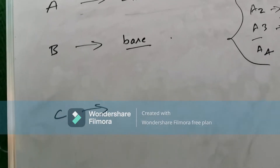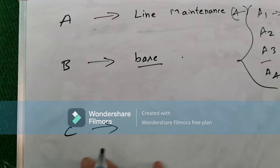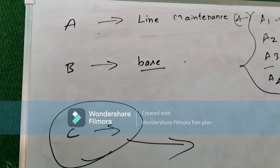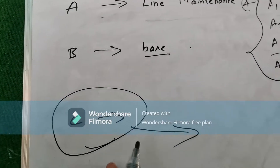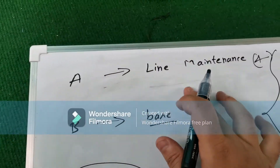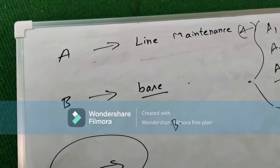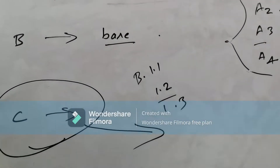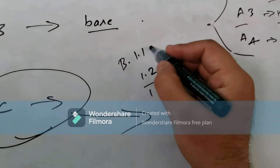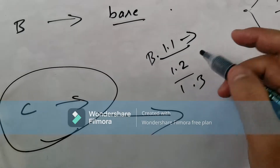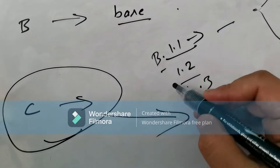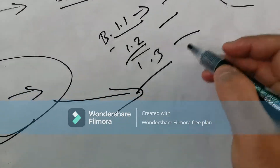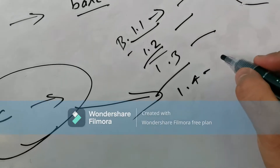As for category C, I will not talk about that today — please comment if you know about it. Now, like the A subcategories, category B also has subcategories: B1.1, B1.2, B1.3, and B1.4. These are similar to line maintenance. B1.1 refers to turbine aircraft, B1.2 to piston aircraft, B1.3 to helicopter turbine, and B1.4 to helicopter piston.